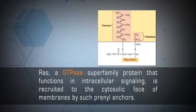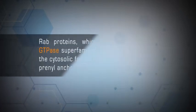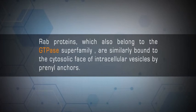For example, RAS, a GTPase superfamily protein that functions in intracellular signaling, is recruited to the cytosolic phase of membranes by prenyl anchors. RAP proteins, which also belong to the GTPase superfamily, are similarly bound to the cytosolic phase of intracellular vesicles by prenyl anchors. These proteins are required for the fusion of vesicles with their target membranes during intracellular trafficking.